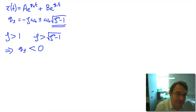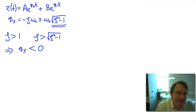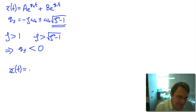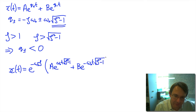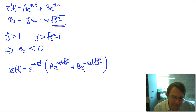Because q, either the plus or the minus, is always going to be less than zero — we have this minus zeta times omega-naught here, and then we're either adding or subtracting a term which is always smaller than it — we always have a negative value, so these are going to give a displacement which exponentially decays away. So x of t is going to be e to the minus omega-naught times zeta, multiplied by a times e to the omega-naught t times the square root of zeta squared minus one, plus b times e to the minus omega-naught t times the square root of zeta squared minus one. This is the sum of two negative exponentials.